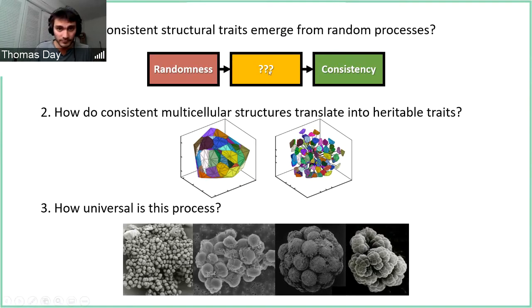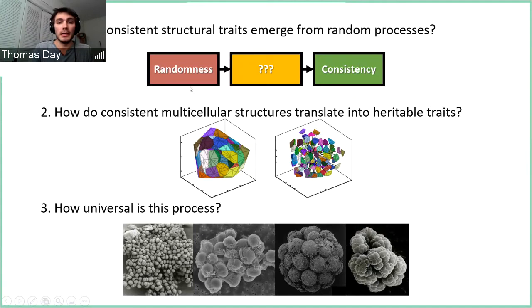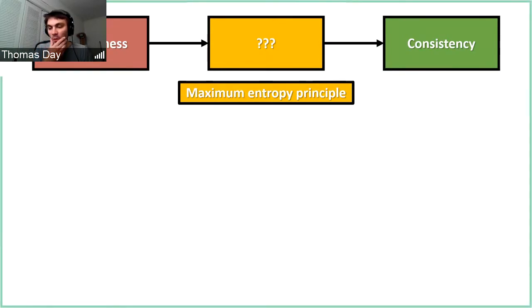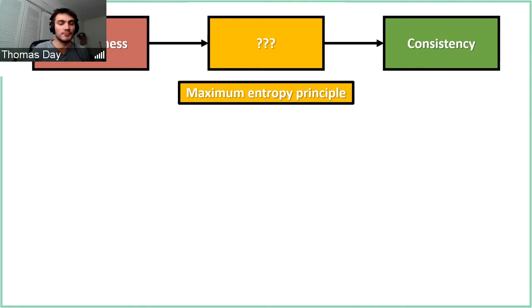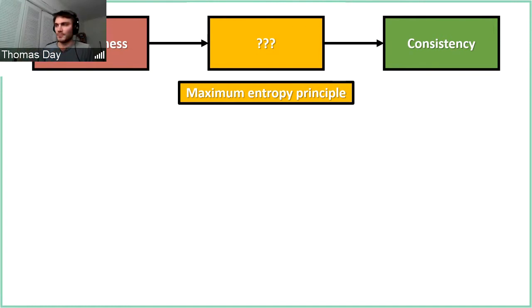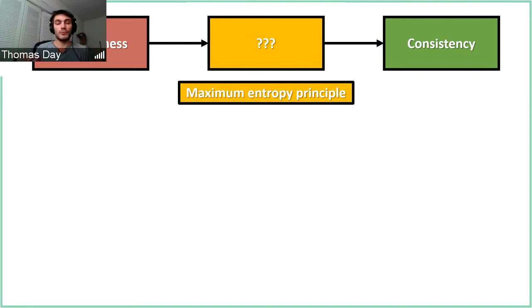To start, let's walk through a thought experiment that will highlight just how consistent distributions can arise from random processes. I'm going to talk about what's called the maximum entropy principle. This sounds very intimidating — there's a famous quote relating to Claude Shannon, who was trying to name this entropic principle in the 1940s. Somebody joked he should name it entropy because nobody really understands what entropy is. But the maximum entropy principle is actually a pretty straightforward process.